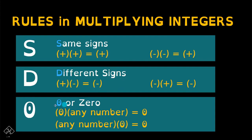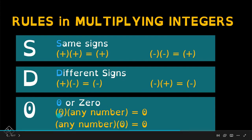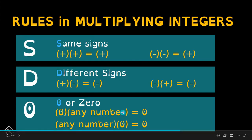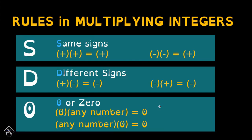And lastly, the zero rule. When zero is multiplied by any number, the answer is zero. The same applies the other way: any number multiplied by zero always gives zero. So that is the third rule.